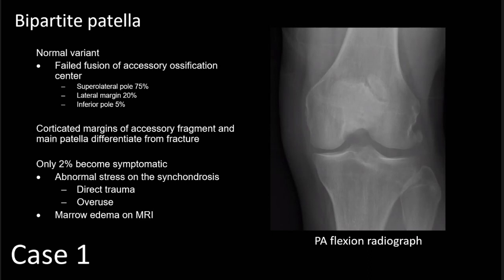Bipartite patella is most often asymptomatic — reportedly only 2% become symptomatic — usually related to abnormal stress along the synchondrosis, either due to direct trauma or overuse. In cases of symptomatology associated with bipartite patella, you'll usually see marrow edema along that bipartite plane on MRI.